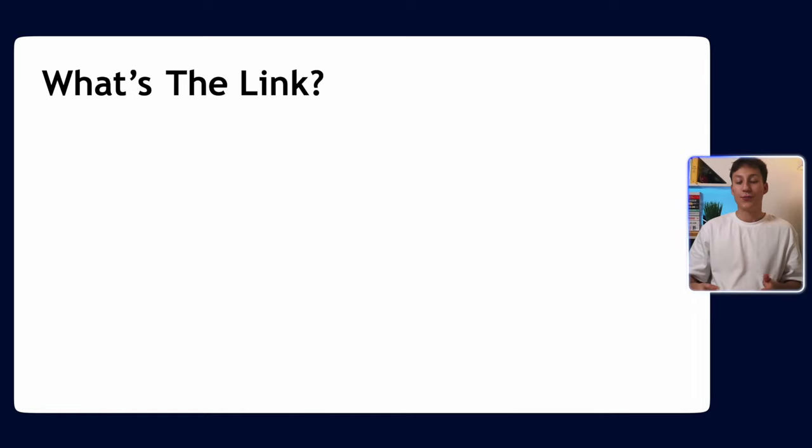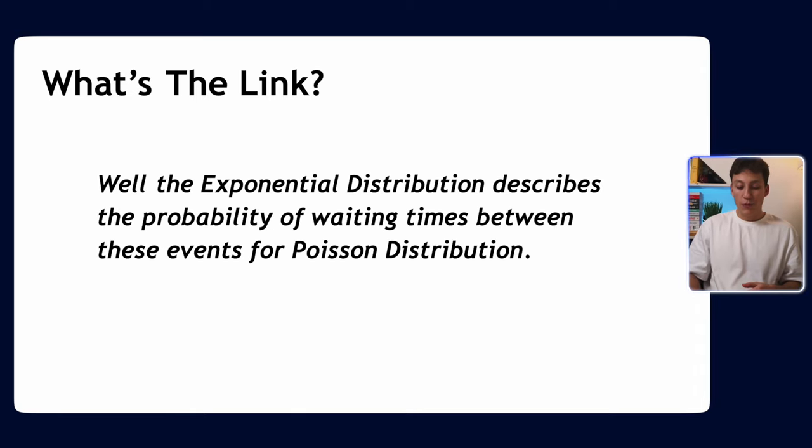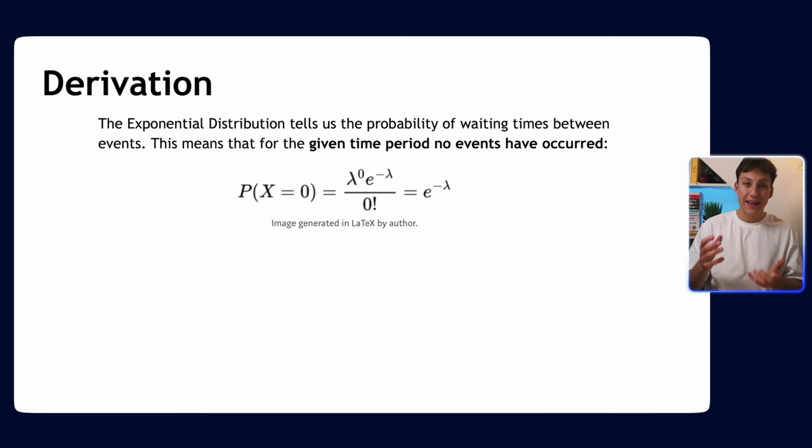Now the point is, why am I talking about the Poisson distribution when this video's about the exponential distribution? They are linked because the exponential distribution is kind of the inverse of Poisson. Whereas Poisson is focused on how many events happen, the exponential distribution describes the waiting times between these events, or the probability of the next event happening in this time period. They complement each other very nicely.